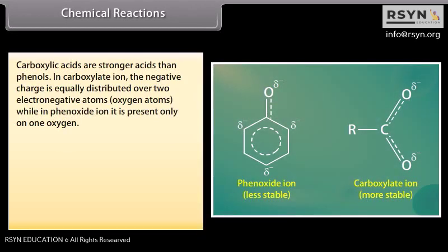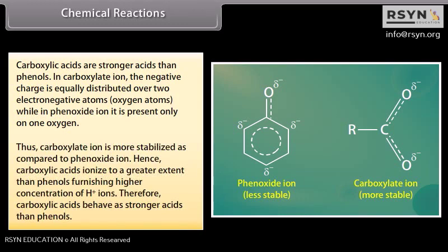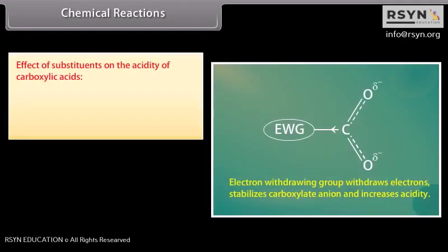Carboxylic acids are stronger acids than phenols. In the carboxylate ion, the negative charge is equally distributed over two electronegative oxygen atoms, while in the phenoxide ion it is present only on one oxygen. Thus, the carboxylate ion is more stabilized than the phenoxide ion. Hence, carboxylic acids ionize to a greater extent than phenols, furnishing a higher concentration of hydrogen ions, and therefore behave as stronger acids than phenols.